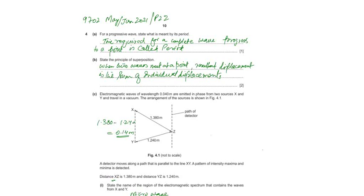State the Principle of Superposition. When two waves meet at a point, then the resultant displacement is the sum of individual displacement.